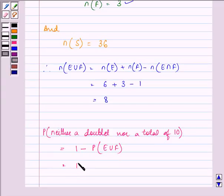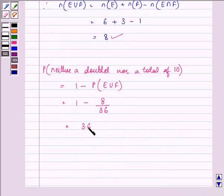The probability of E union F is the number of elements in E union F divided by the number of elements in the sample space. So we have 1 minus 8/36, which equals 28/36, which simplifies to 7/9.